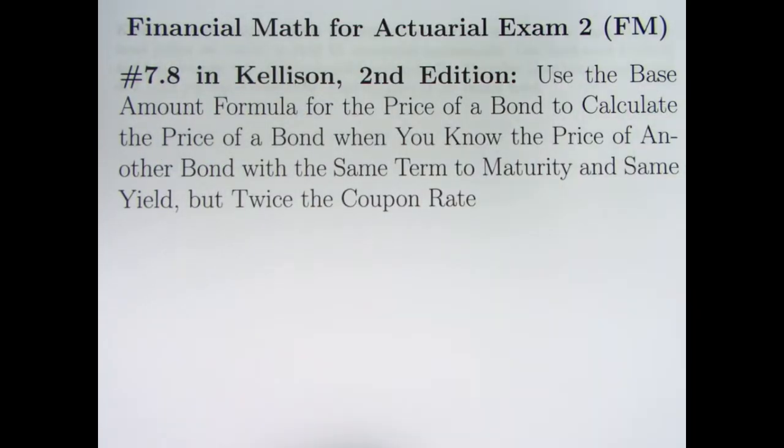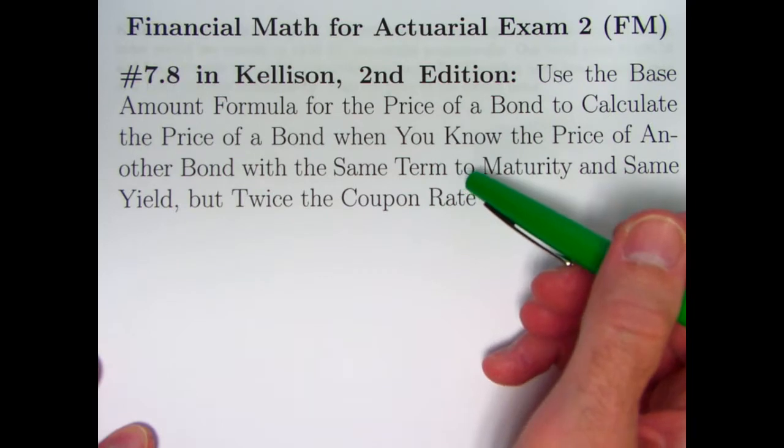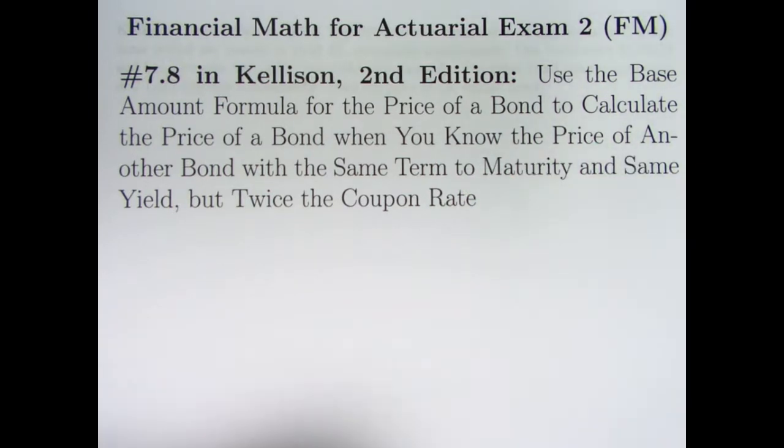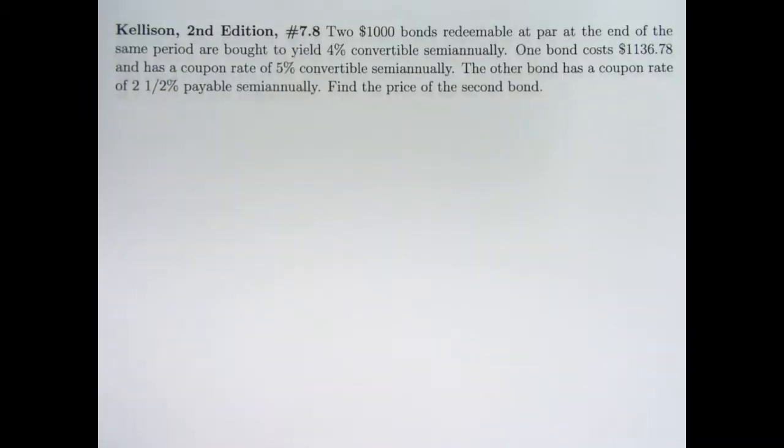We will be using that base amount formula for the price of a bond to calculate the price of a bond when we know the price of another bond that has the same term to maturity, the same yield rate, but twice the coupon rate. Why use the base amount formula here? Well it turns out in solving this problem we need to solve for n, the number of coupons, and n is probably most easily solved for in the base amount formula because you don't have any present values of annuities immediate, the a_n symbol in the formula.